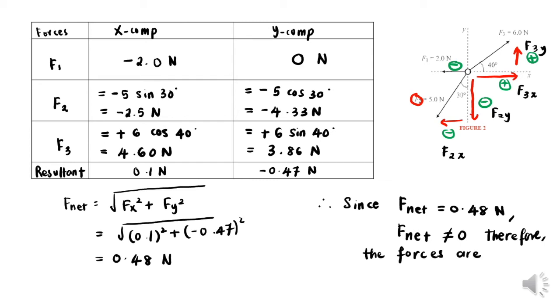Since our F net equals 0.48 N, this means the particle is not in equilibrium because our F net is not equal to zero.